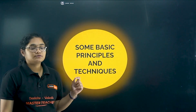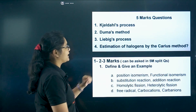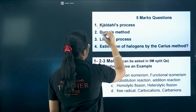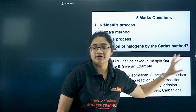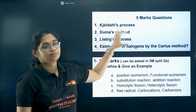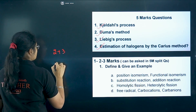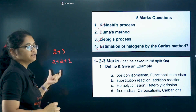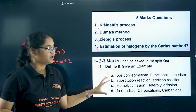Now coming to the next chapter: Some Basic Principles and Techniques. In the five marker section, you have these questions: Dumas method, Liebig's method, and estimation of halogens by Carius method — also Kjeldahl method. Numerical questions can definitely be asked from here, so please prepare this. In five marker questions, it will be either two plus three or two plus two plus one subdivisions. You can expect questions like: what is position isomerism, functional isomerism.